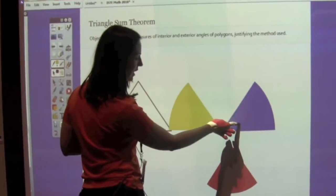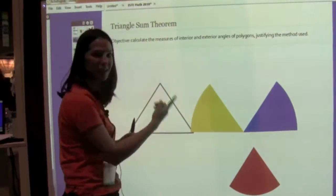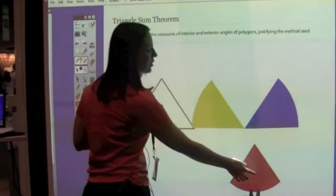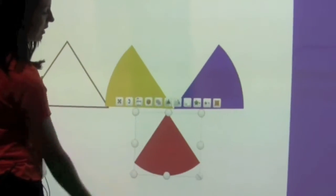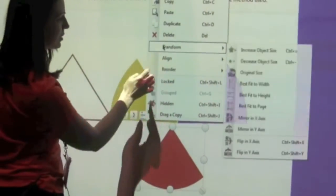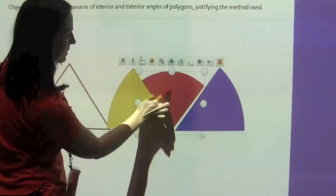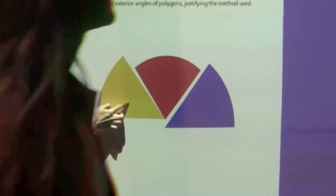I've made my little filled arcs. And I want to prove that those three angles added together are going to equal 180 degrees. So I'm going to take my little red triangle here and I'm going to flip it in the x-axis so I can line these three pieces up.